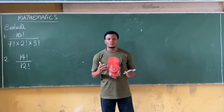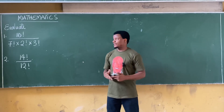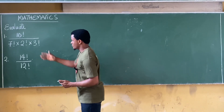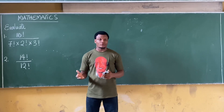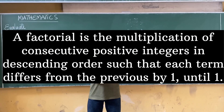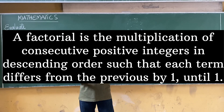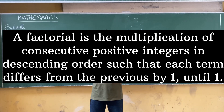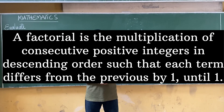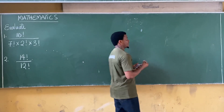Hi there and welcome to today's class. For today's class we'll be trying to solve some questions on factorial. By definition, a factorial is simply the multiplication of consecutive positive integers in descending order, such that each term differs from the previous by one until one.